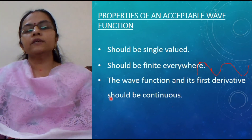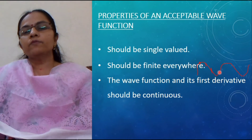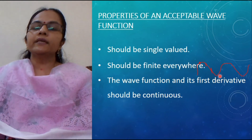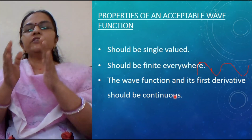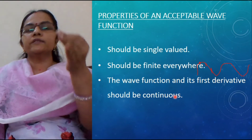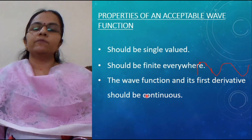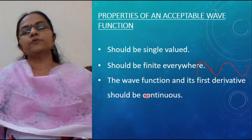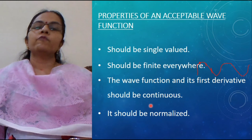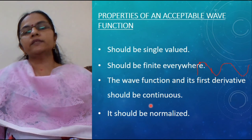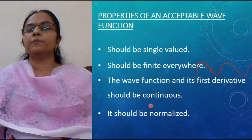The third property is that the wave function and its first derivative should be continuous. This means the wave has a continuous value — it is not discontinuous at some point. Because it has a value at each and every point, its derivative will also have a value at each and every point. The last property is that it should be normalized. Whenever you write a wave function, you have to check whether it is normalized or not. If not, you have to perform the normalization and find the appropriate wave function.